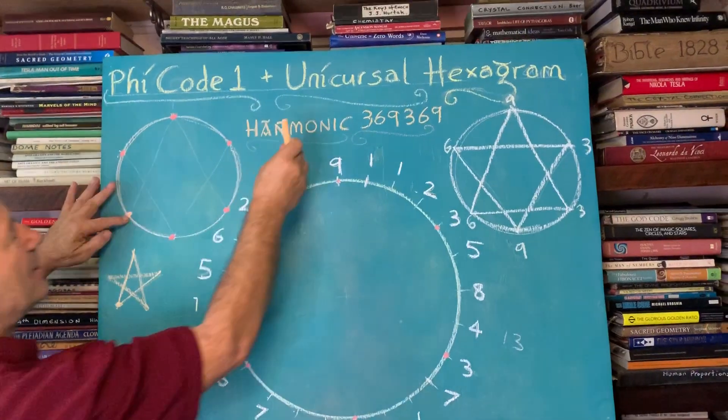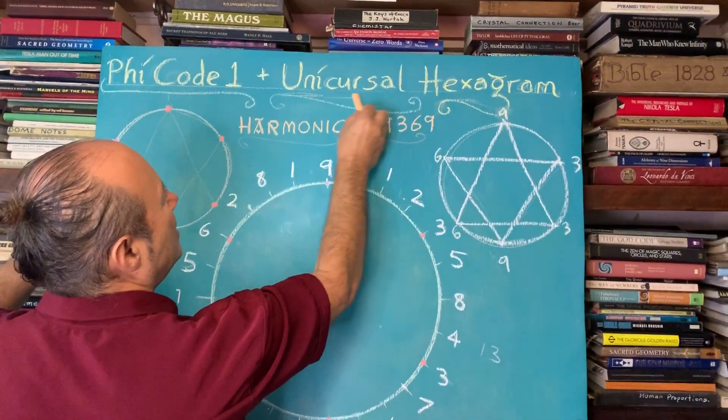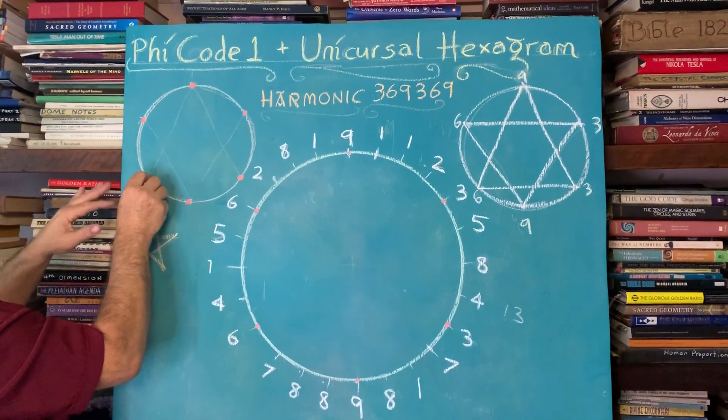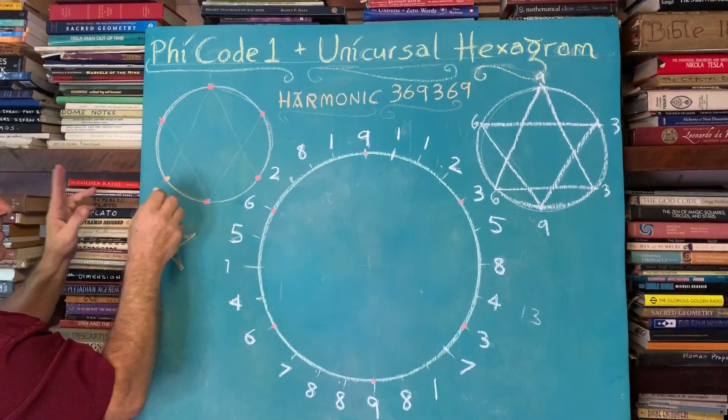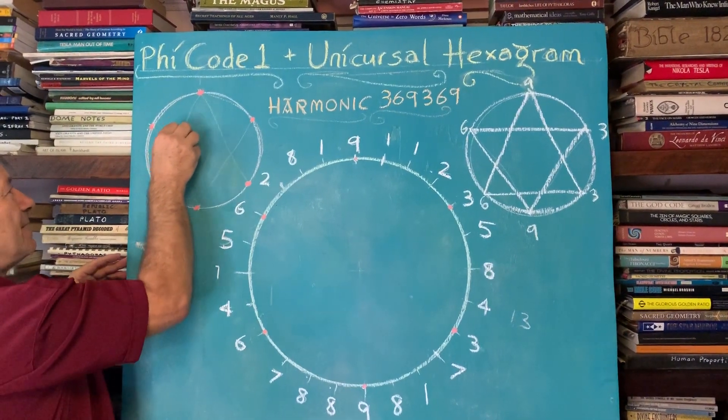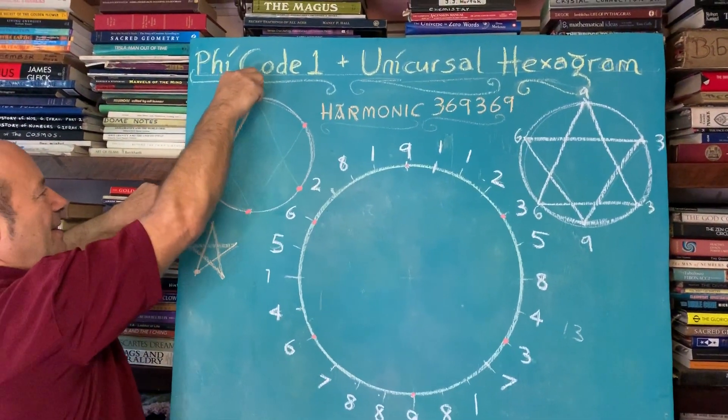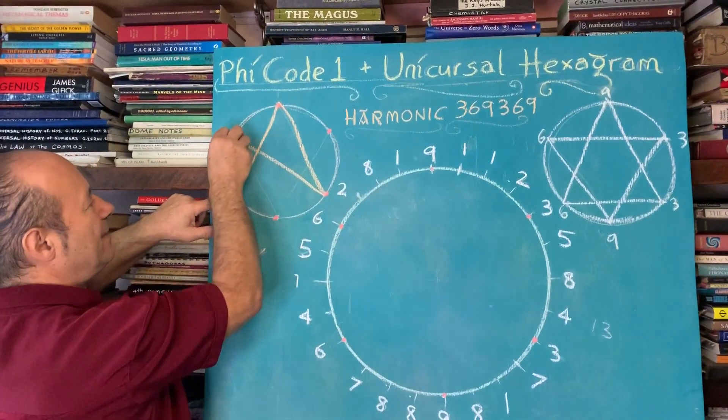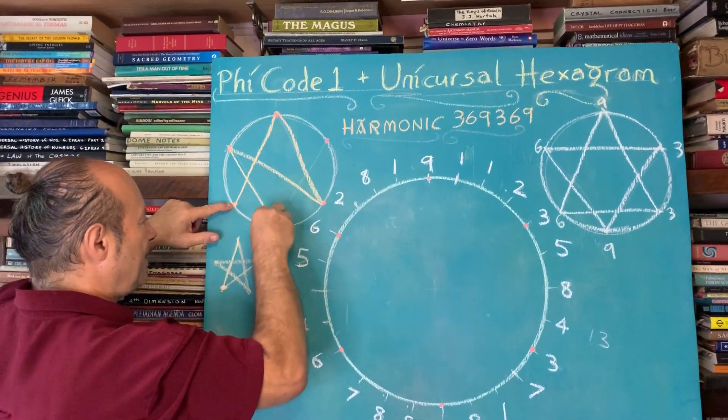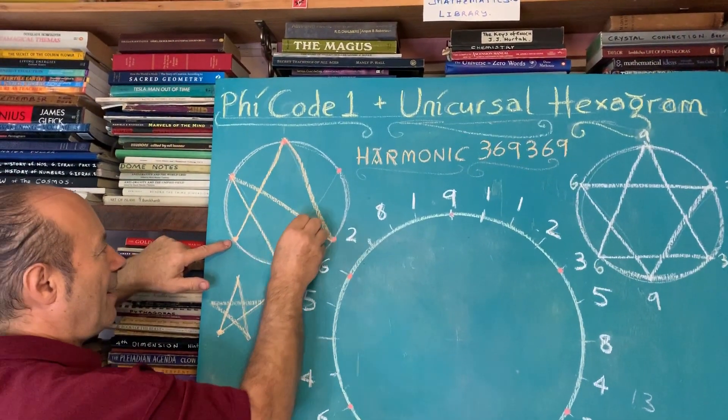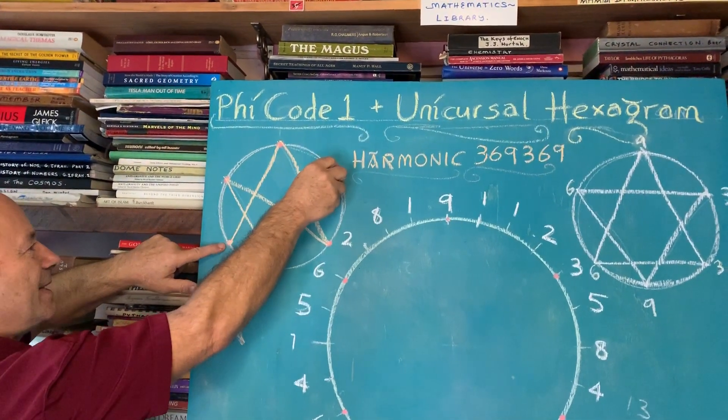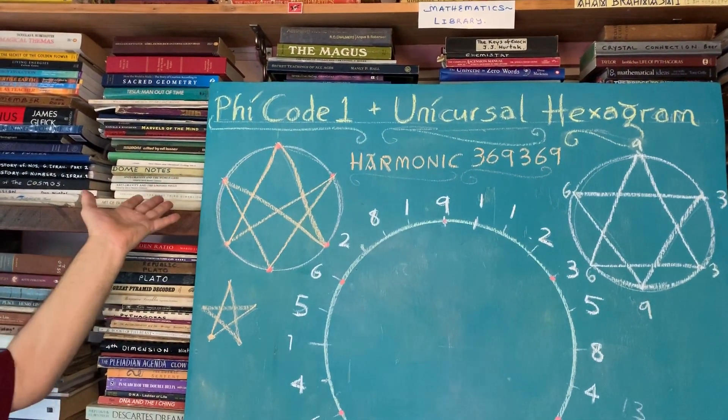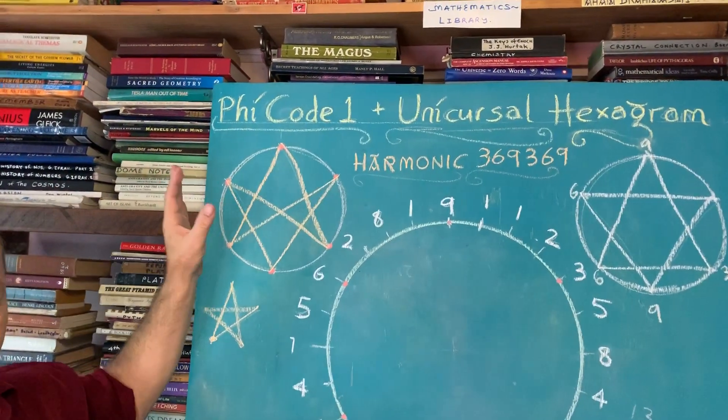So it's called unicursal. Uni means 1, and cursal means line. Unicursal means we're going to draw the Star of David, but without two separate triangles. So this is the solution. We start from here, I've got to come back to here. I go down. Then I go across to there. I go down here. I've got to come back to this point. I go up to there. And you can see that I return right back to here. That's called the unicursal hexagram.